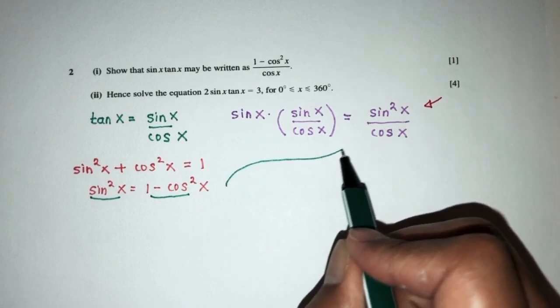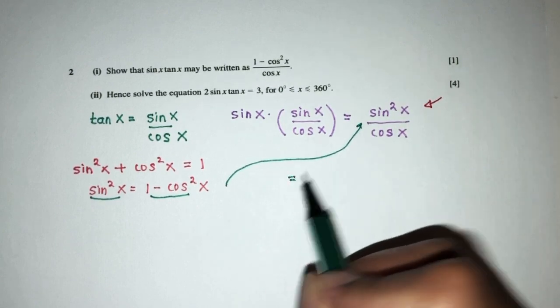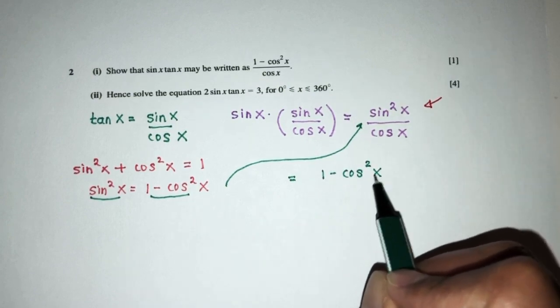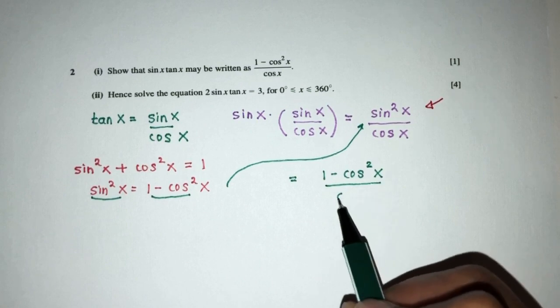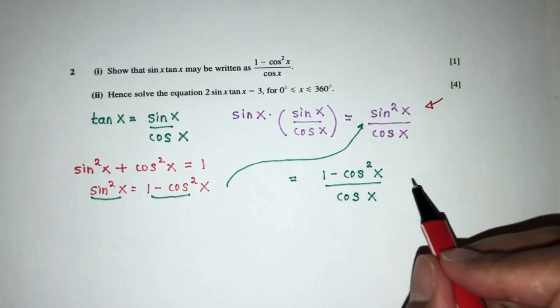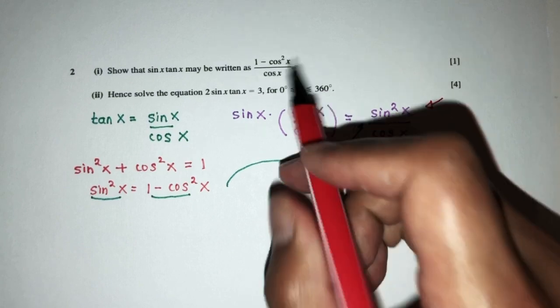So this won't go up here. If you think that will be, sine square x will be 1 minus cos square x over the value of cos x. And guess what? This is shown as required, as we need here for part 1.